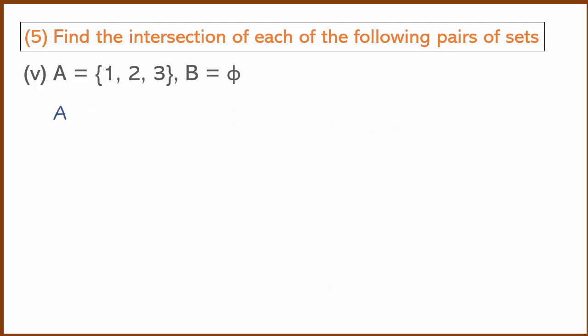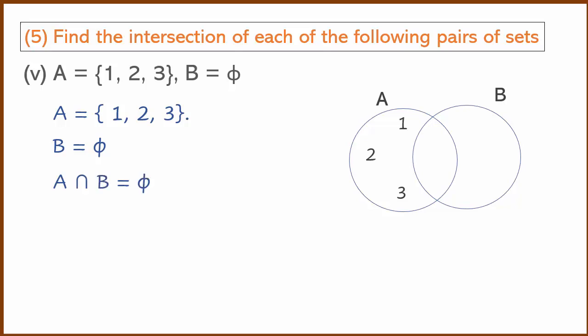The final example: A = {1, 2, 3} and B is the empty set. The intersection of any set with the empty set is the null set. So A ∩ B = φ.